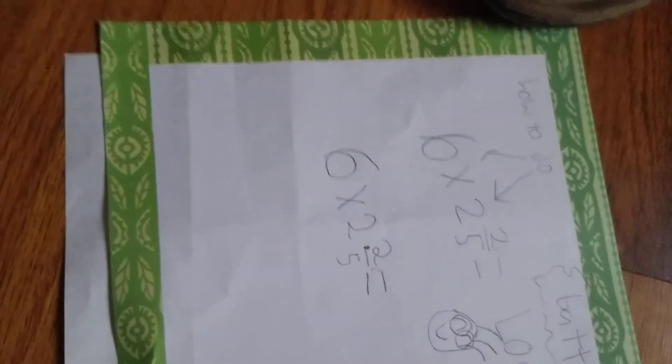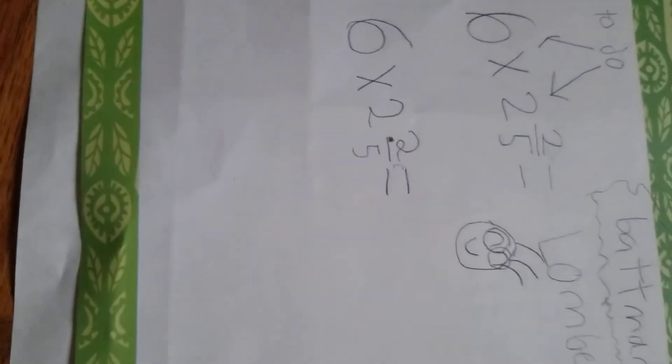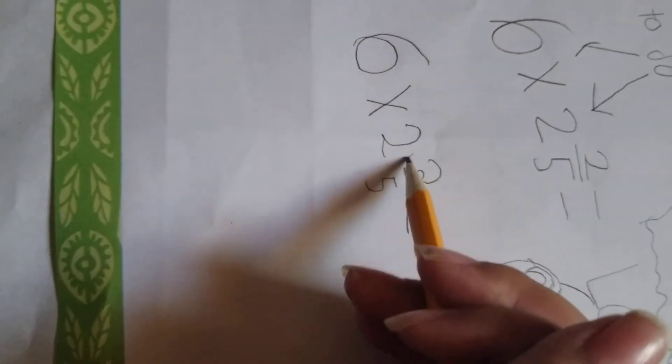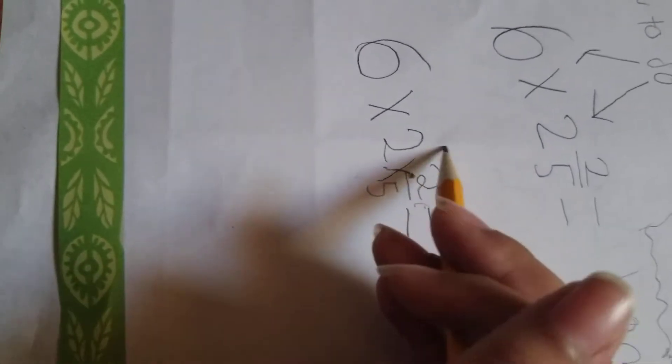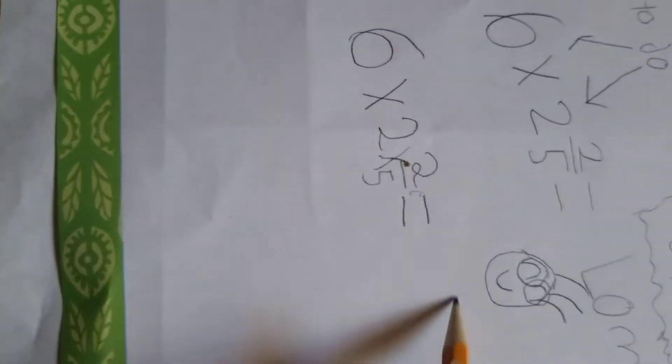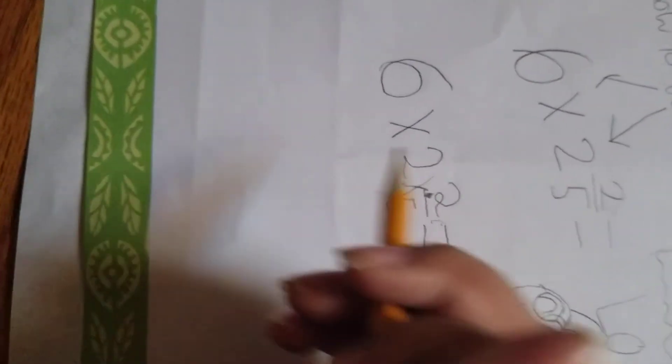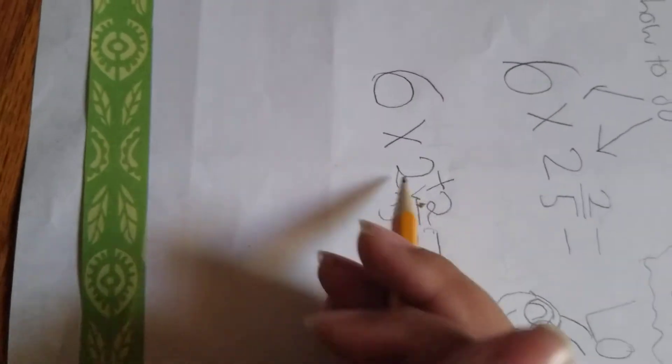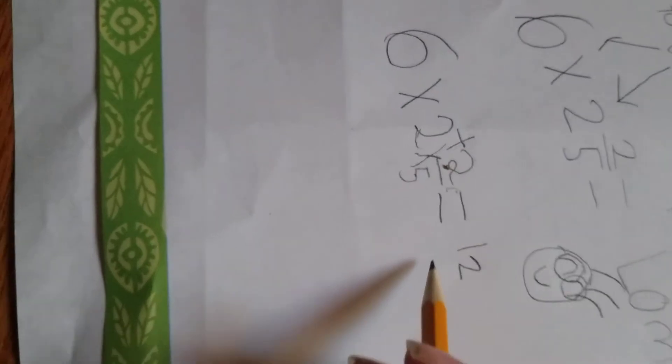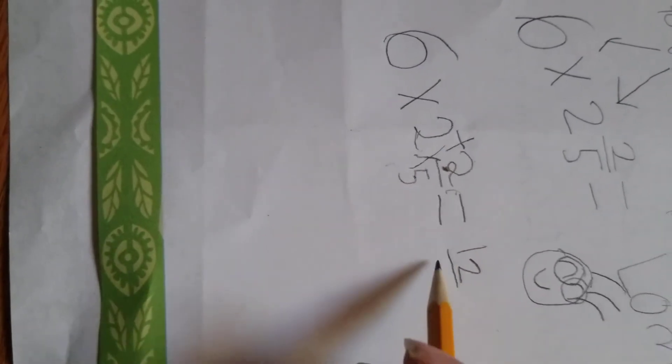The problem is six times two and two-fifths. Now all you really need to do is first five times two is ten, and then plus two is twelve. So five times two, you times these two and then add it, so it's gonna be twelve-fifths. It's kind of hard to draw while making a video.